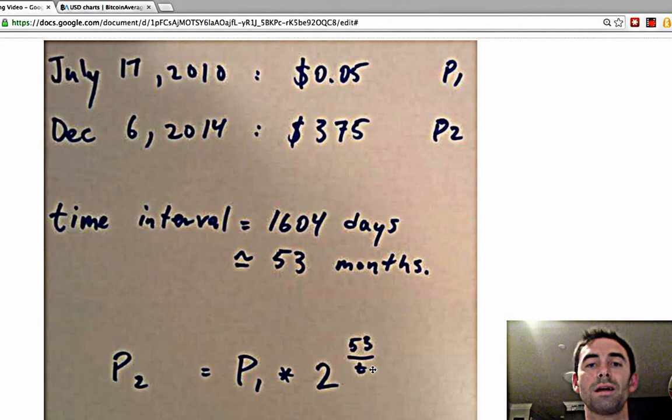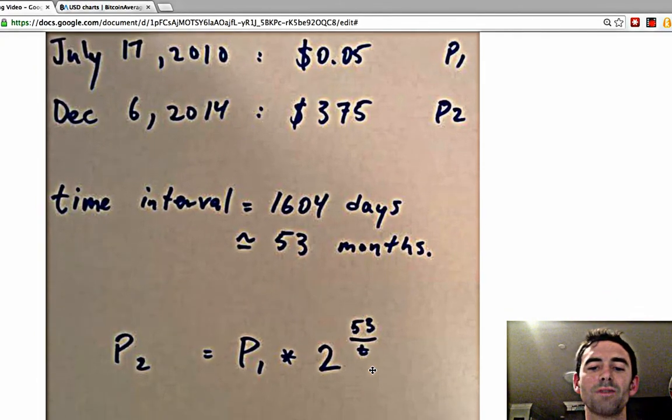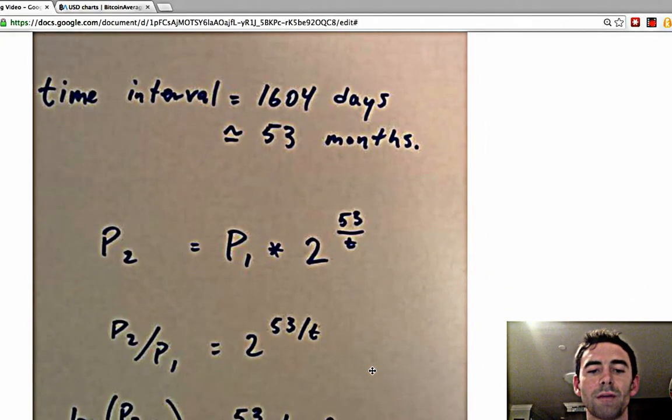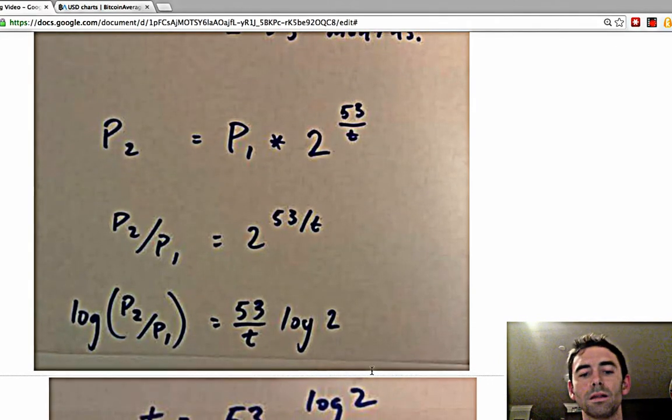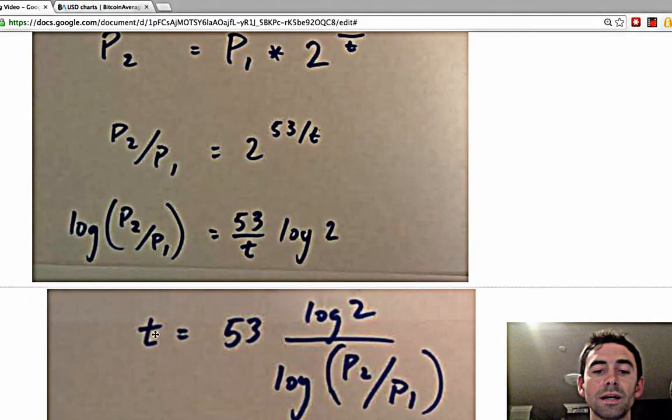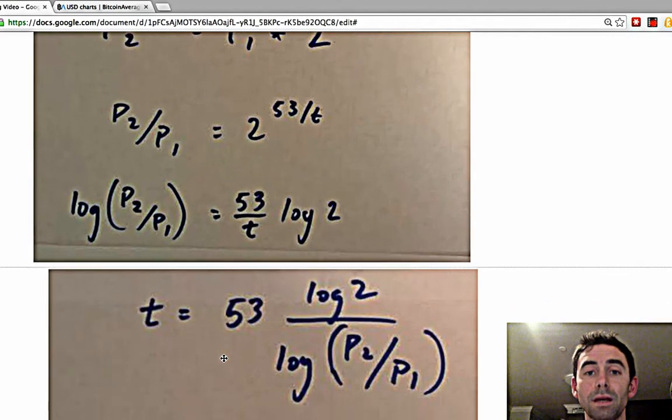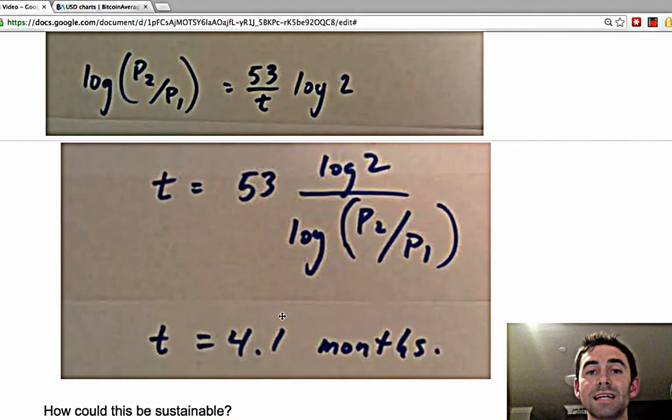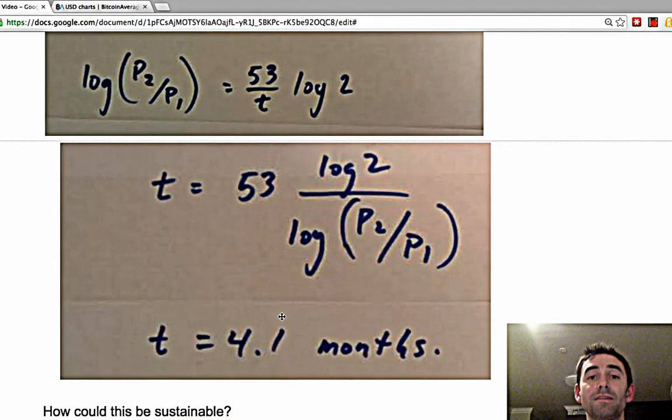Now we got to do some rearrangement. Solve for T, divide both sides by P1, take the log, rearrange it. Plug in the numbers, you get doubling time for the price of Bitcoin is 4.1 months. That's incredibly fast.